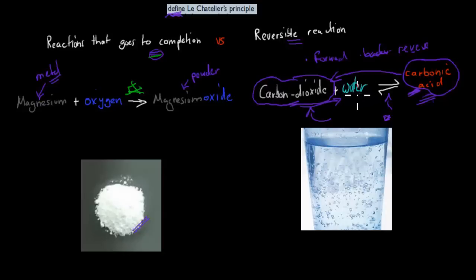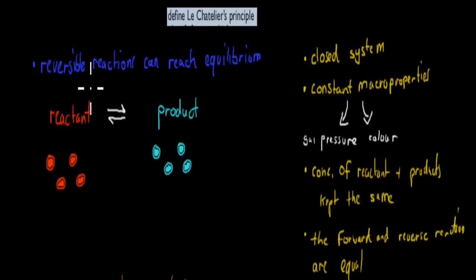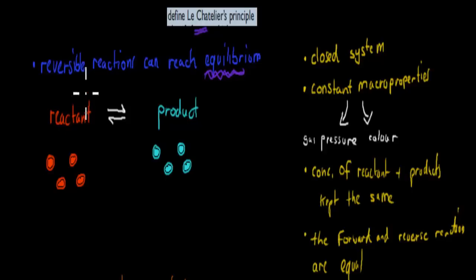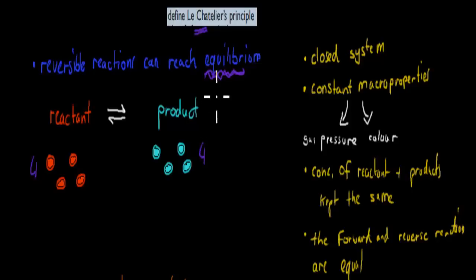A reversible reaction can go both forward and in reverse. You need to know that because when it comes to equilibrium — which is very important for understanding Le Chatelier's principle — equilibrium is the idea that you have reactants and products. Reactants come together and form products. If you theoretically had four reactants and four products and reached equilibrium, what that means is things stay the same and there's no overall change.